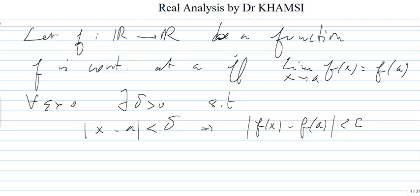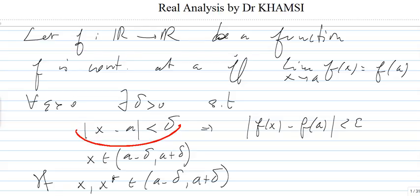So in particular, we can replace this by x belongs to (A - delta, A + delta). And what's interesting is that if we take any x and x star in (A - delta, A + delta), then the triangular inequality will give us that this is less than 2 epsilon. So if I start with epsilon over 2 here, then what we're going to find here is just epsilon.